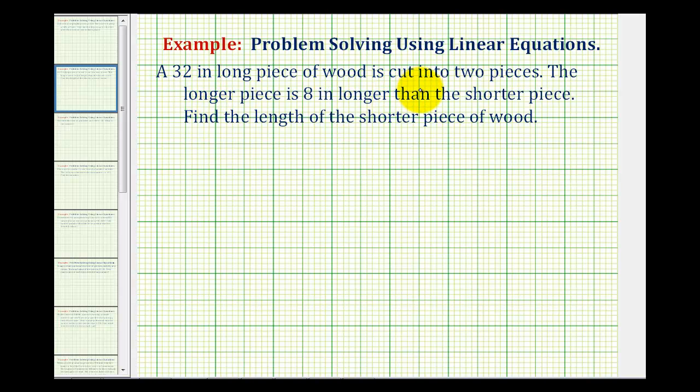A thirty-two inch long piece of wood is cut into two pieces. The longer piece is eight inches longer than the shorter piece. We want to find the length of the shorter piece of wood. Let's see if we can model this.